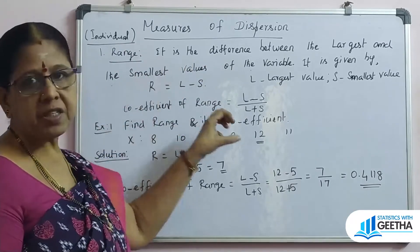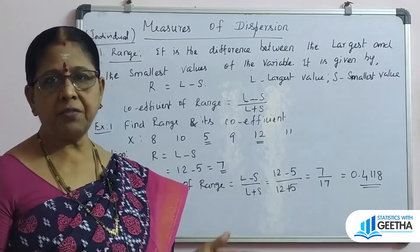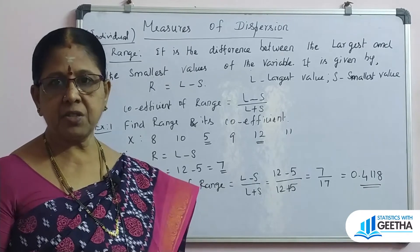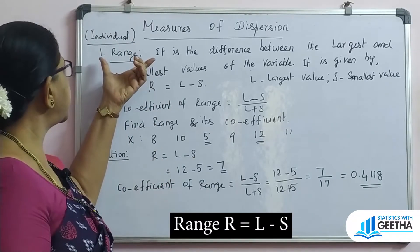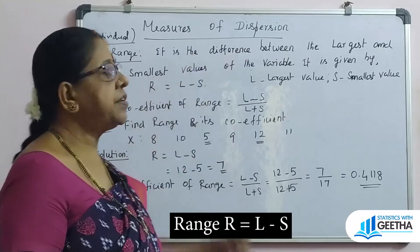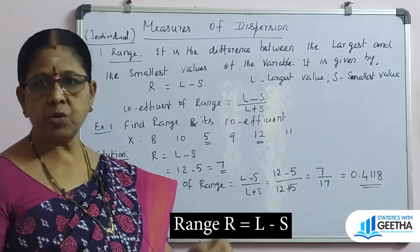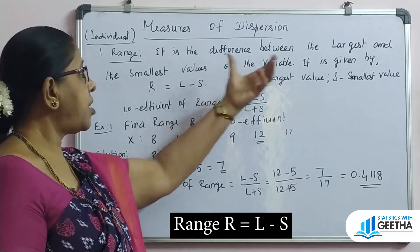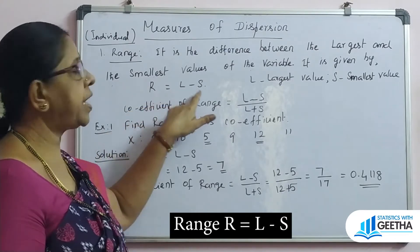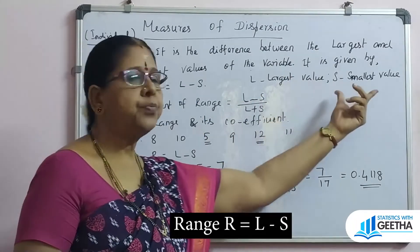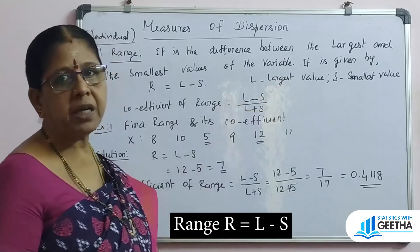Now let's see the first measure of dispersion, that is range. Range is the difference between the largest item and the smallest item in the given data. X denotes the variable value — L denotes the largest value and S denotes the smallest value. The formula is: Range R = L minus S. The corresponding relative measure, coefficient of range = (L minus S) divided by (L plus S).